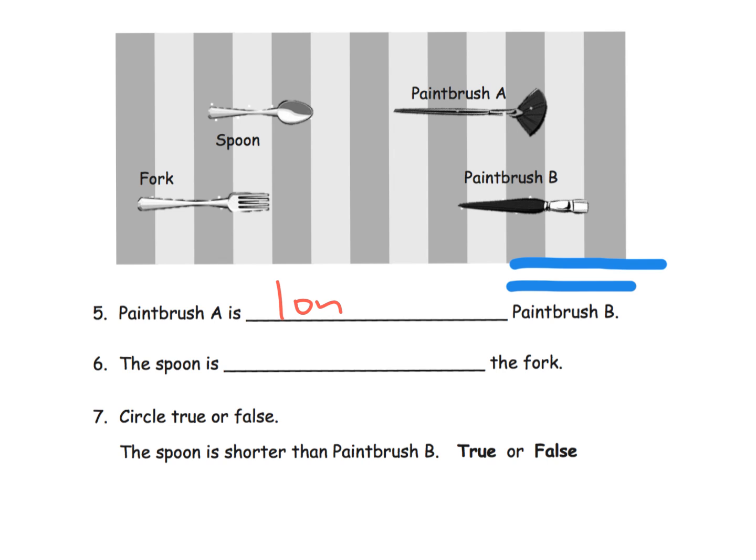So we could do that, paintbrush A is longer than paintbrush B. That's one way to do it. Or your students might refer to the bars and see that they're equal length, and that, oh paintbrush A appears to be one, two, three, almost four intervals long, whereas paintbrush B looks like it's one, two, three long. So the students might compare that way.